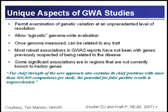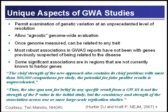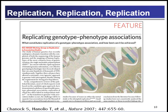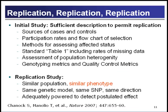There's a nice overview of GWAS studies by David Hunter and Peter Kraft. In their paper they say: 'The chief strength of this new approach also contains its chief problem. With more than 500,000 comparisons per study, the potential for false positive results is unprecedented. The sine qua non for belief in any specific result from GWAS is not the strength of the p-value in the initial study, but the consistency and strength of the association across one or more large-scale replication studies.' This perspective is also captured in an excellent report from the NCI-NHGRI working group on replication and association studies.